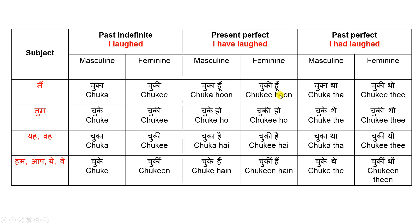I'm not going to read all these things — you can take a screenshot, print it out, and practice. Just know that when the subject is 'meh,' the suffix will be 'chukha' in past indefinite tense. If it is 'ham,' 'ap,' or 'yeh,' and for 'ham' or 'way' in the feminine it is 'chukhi thi.' For feminine in present perfect tense it is 'chukhi hen,' and so on.